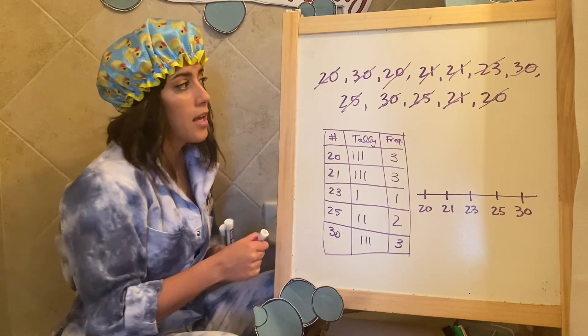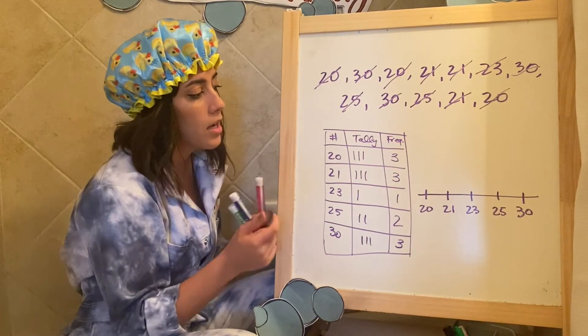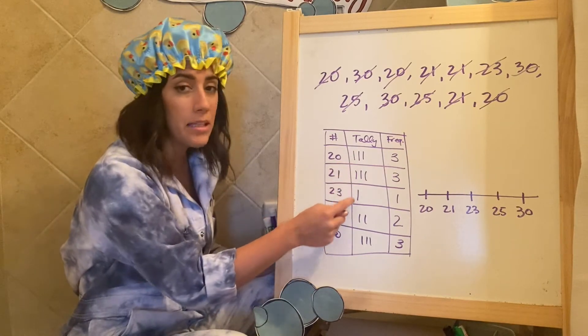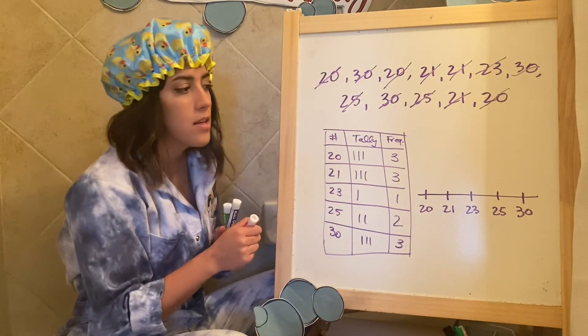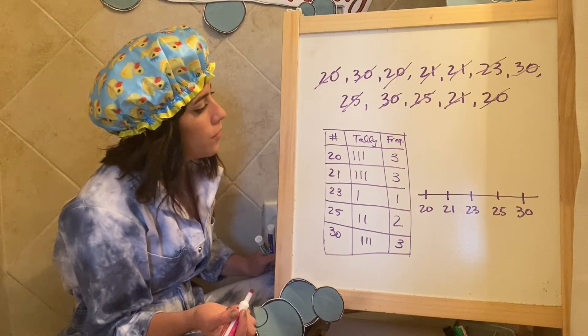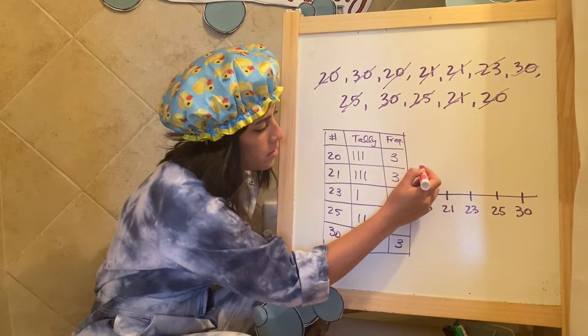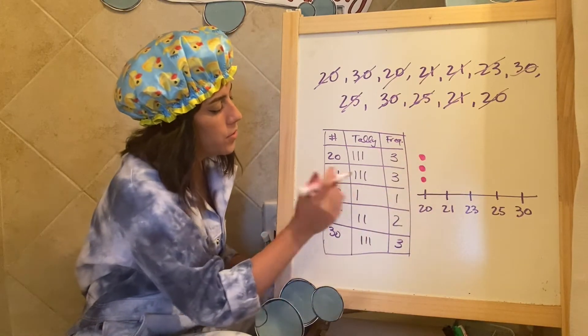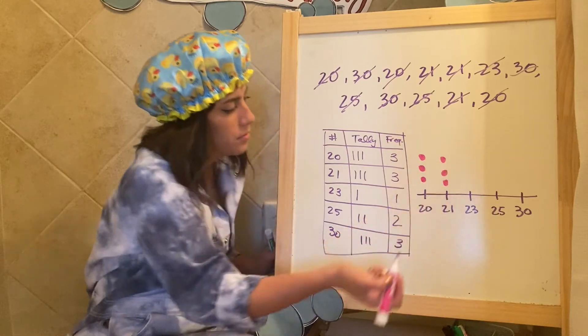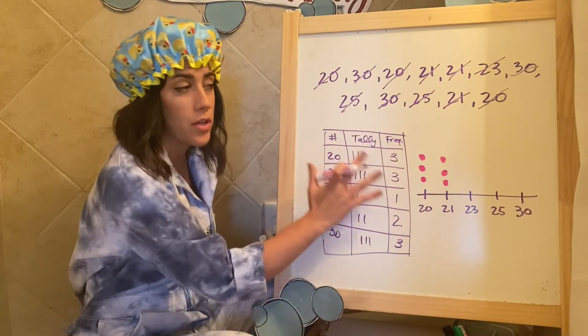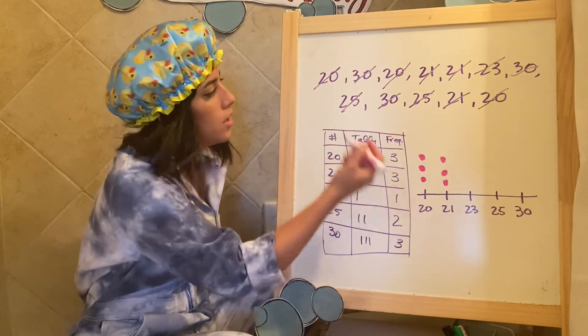So same thing. I would go through and mark how many there were of each one, but instead of a tally mark, I'm doing this with dots. And so for 20, I had three, so I would put one, two, three for 21. I also had three. And even if I hadn't made this frequency chart, I could still count them off.